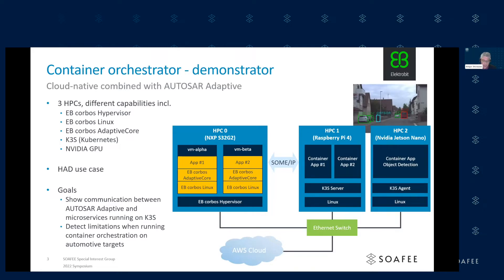On that, we deployed our EB Corbus software stack, which consists of the EB Corbus hypervisor. We have two virtual machines: VM Alpha and VM Beta. They both contain EB Corbus Linux as the base, then the EB Corbus Adaptive Core, which is an AUTOSAR Adaptive implementation. We have an application here that communicates with the outside world via SOME/IP.